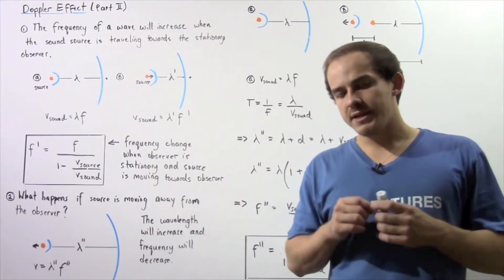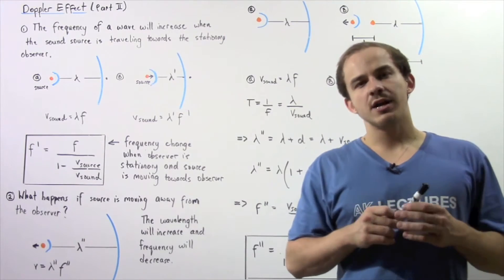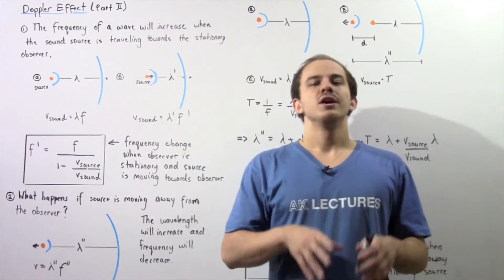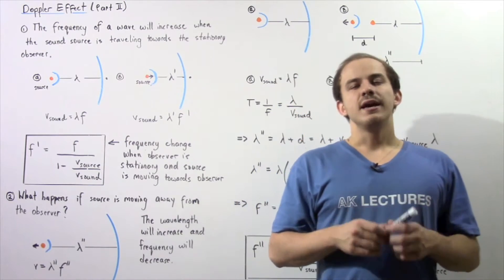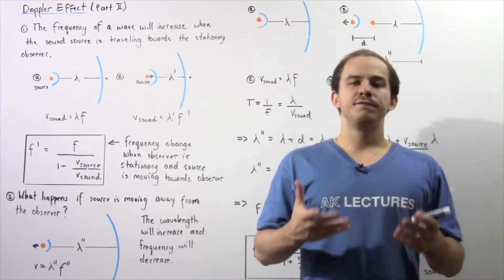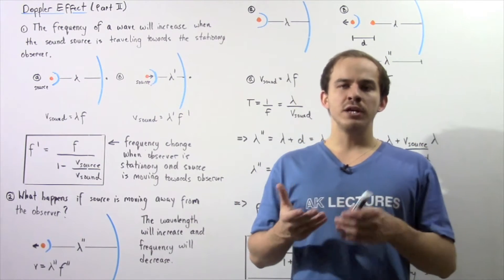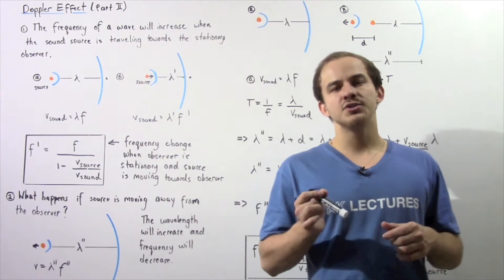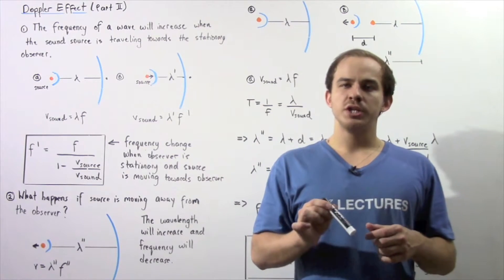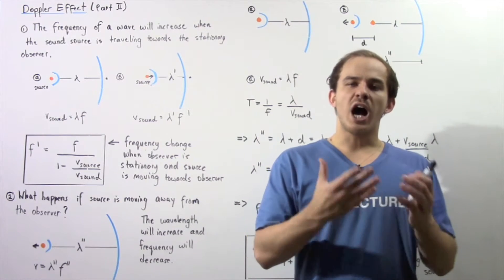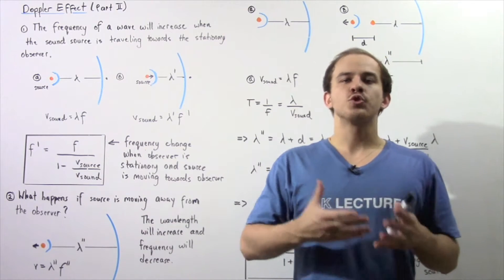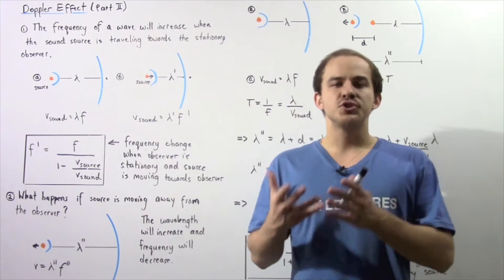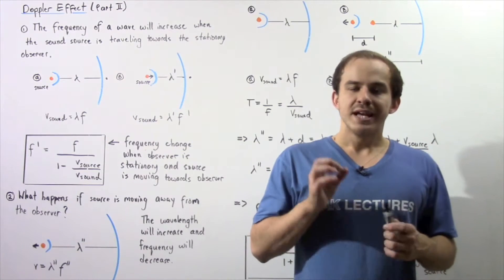In the previous lecture, we began our discussion on the Doppler effect of waves. The Doppler effect is essentially the change in frequency that takes place because there is relative motion between the object creating that wave and the observer observing that wave.